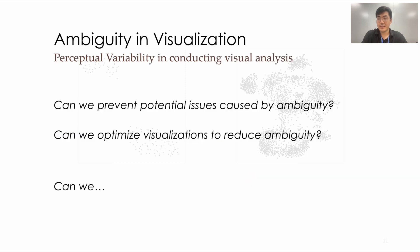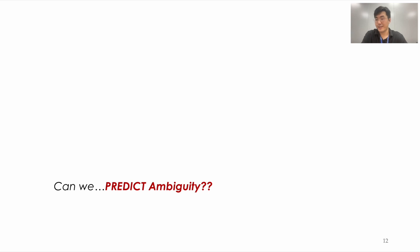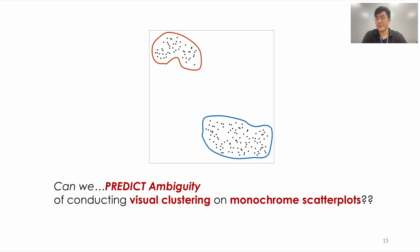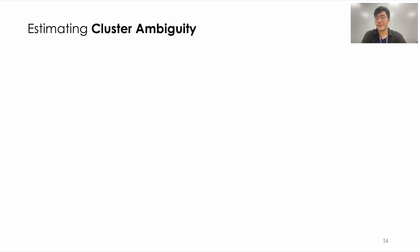Can you prevent potential issues caused by ambiguity? Or, can you optimize visualizations to reduce ambiguity? Here, we may ask: can you predict or estimate ambiguity? In this research, we answer this question while constraining our focus to the ambiguity in the visual clustering task in monochrome scatterplots, which we call cluster ambiguity.